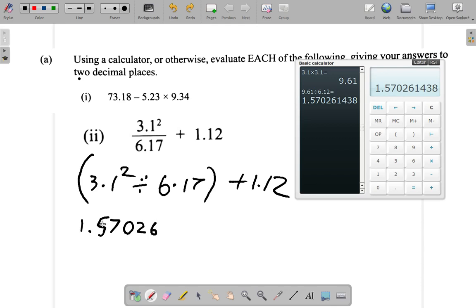So I have 1.57026—I could have used three decimal places, 1.570. If you're going to write the answer to two decimal places, do the working in more than two decimal places. So I'm going to have this plus 1.12.